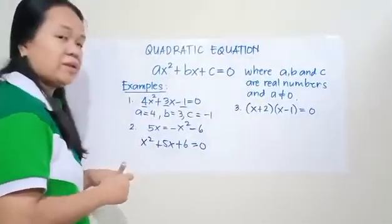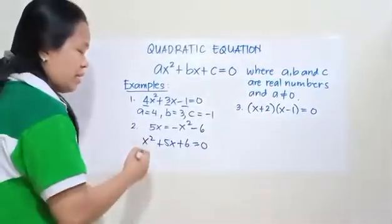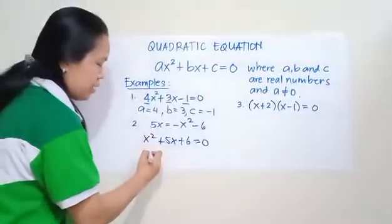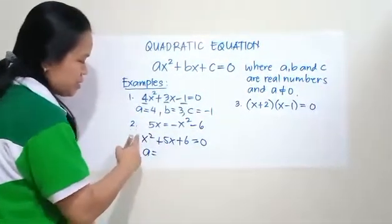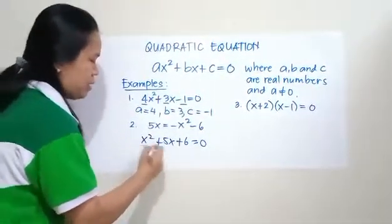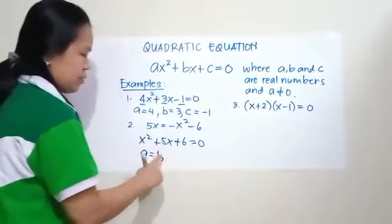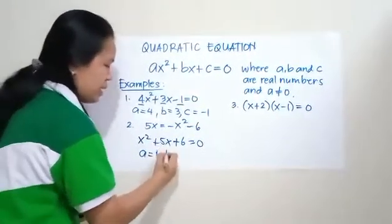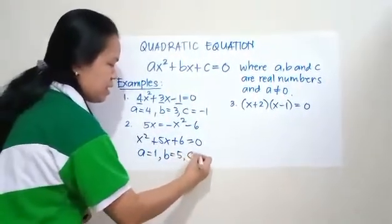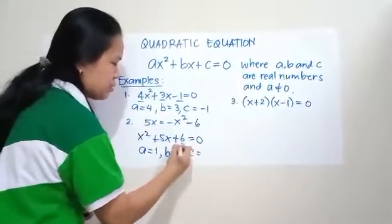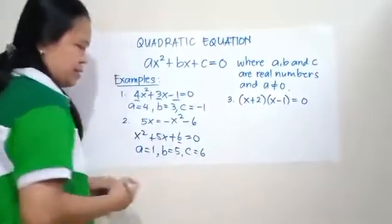Now we can find the values of A, B, and C. In this equation, since there is no number written before X squared, your A is equal to 1, B is equal to 5, and C is equal to 6.